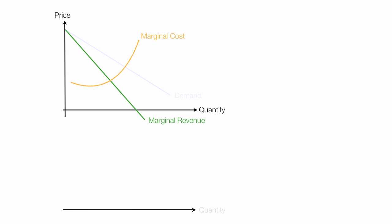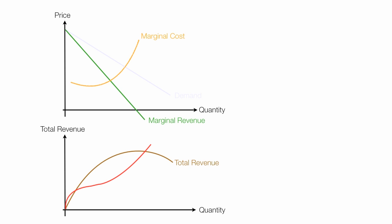The total revenue curve looks something like this — it curves up and then down. The total cost curve looks like this. The monopolist will produce where the slope of the total revenue curve is equal to the slope of the total cost curve.